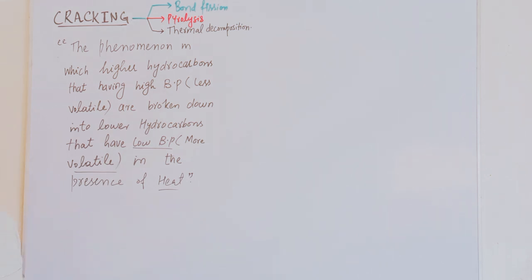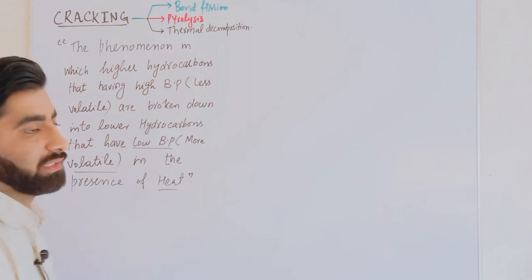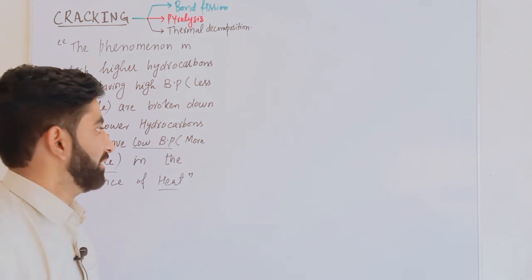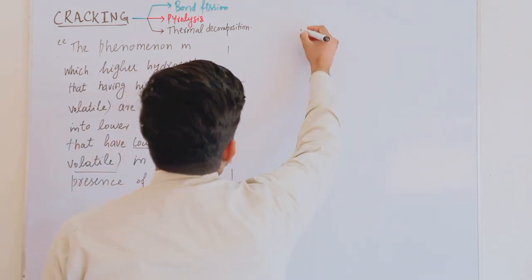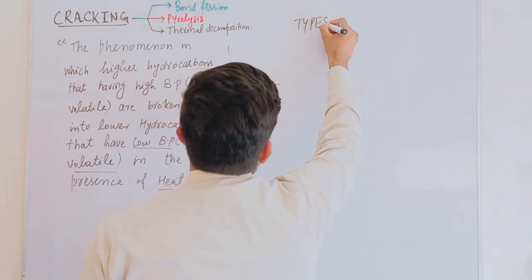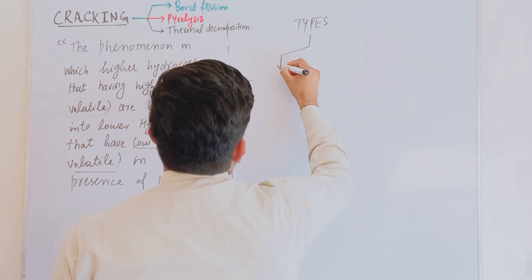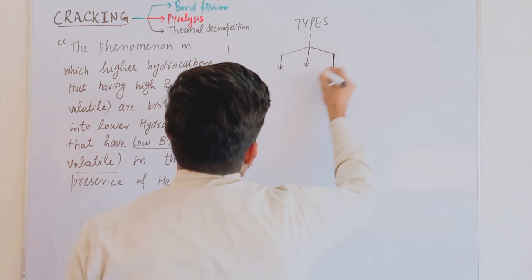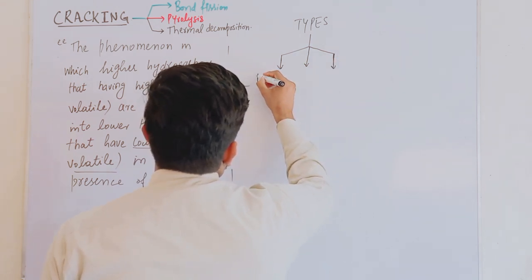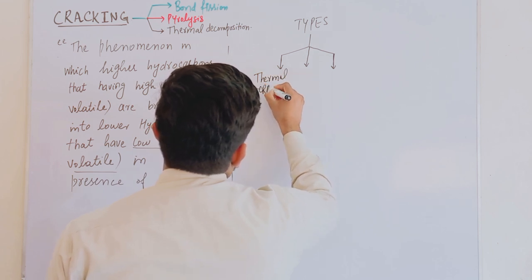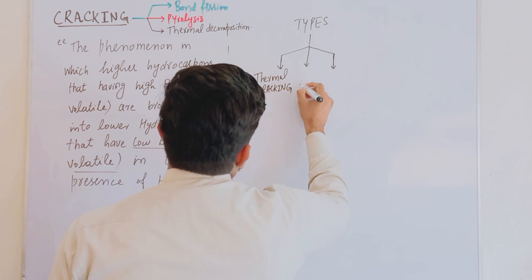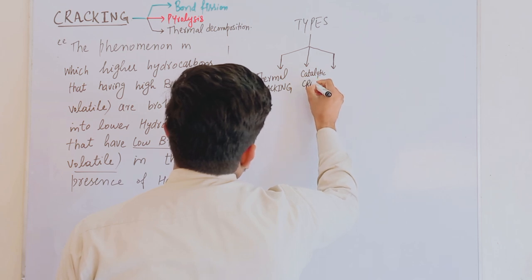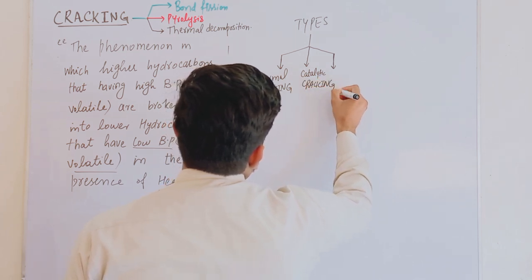Cracking is also known as bond fusion, pyrolysis, or thermal decomposition. Now we discuss the types of cracking. Cracking is classified into three main types: thermal cracking, catalytic cracking, and steam cracking.